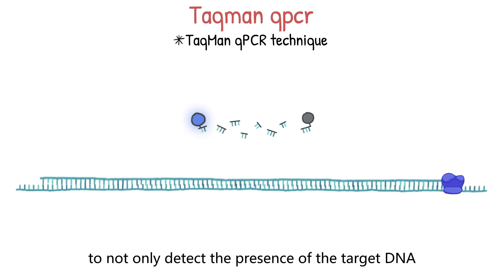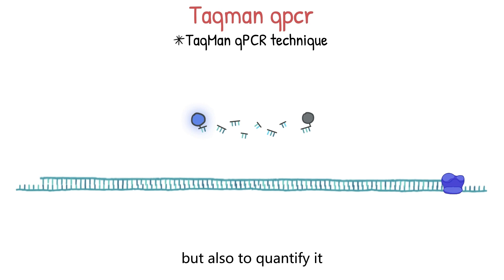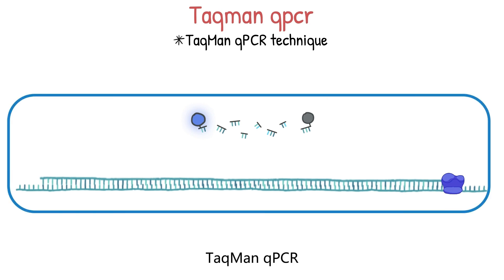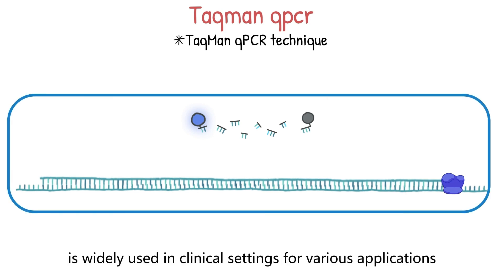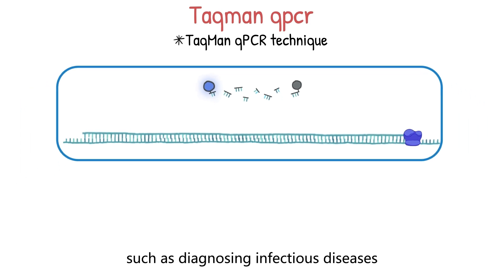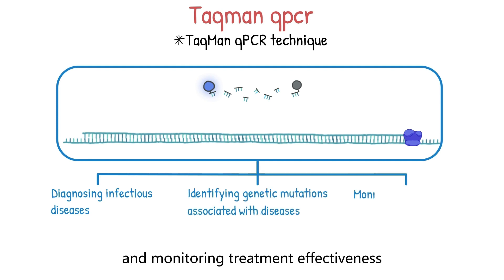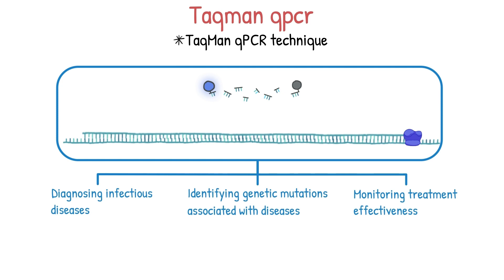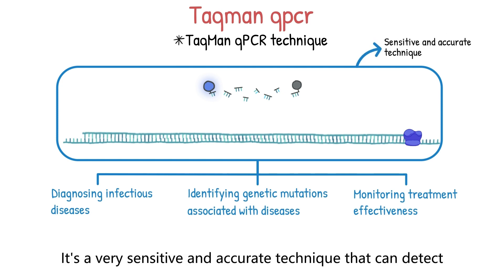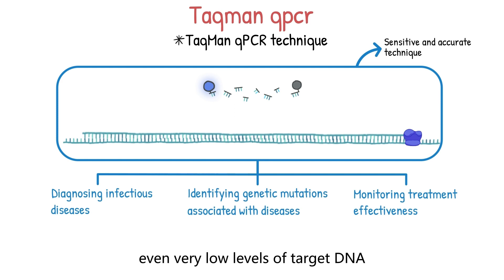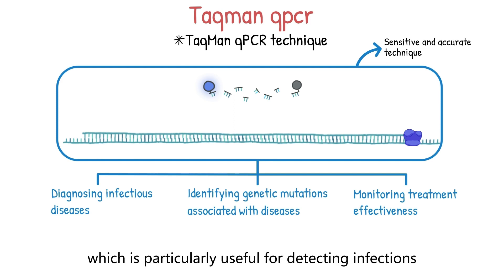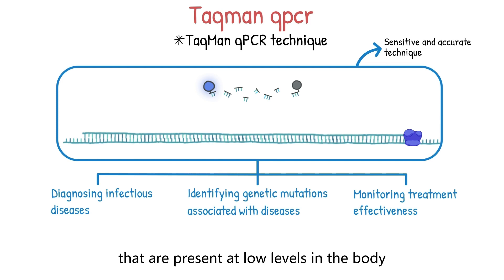This cleavage results in a fluorescent signal that we can measure in real time. This enables us to not only detect the presence of the target DNA, but also to quantify it. TaqMan qPCR is widely used in clinical settings for applications such as diagnosing infectious diseases, identifying genetic mutations associated with diseases, and monitoring treatment effectiveness. It's a very sensitive and accurate technique that can detect even very low levels of target DNA, which is particularly useful for detecting infections present at low levels in the body.